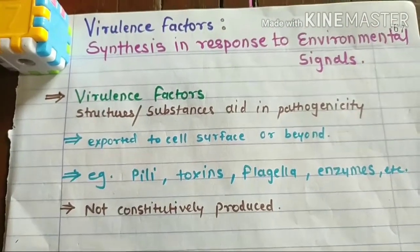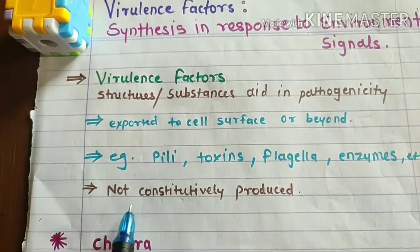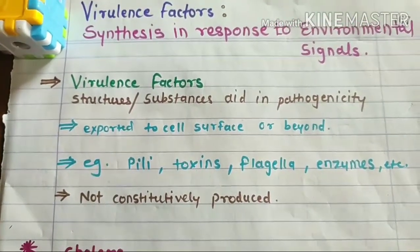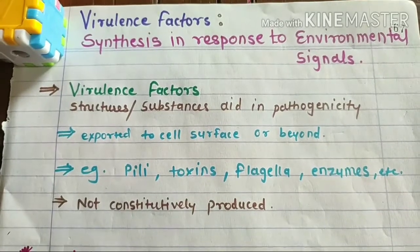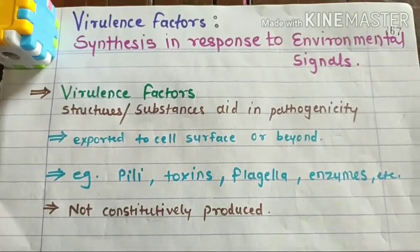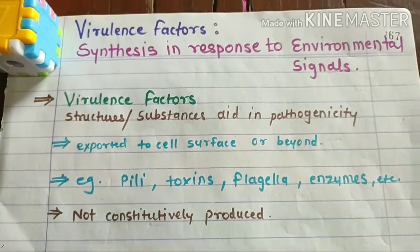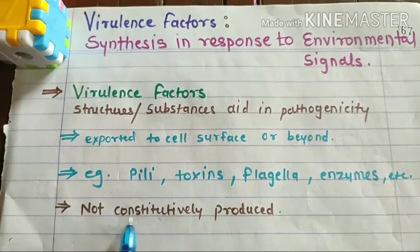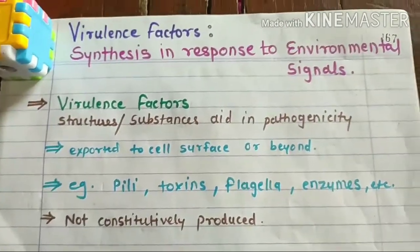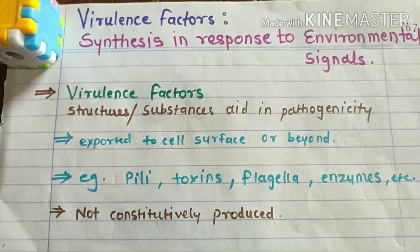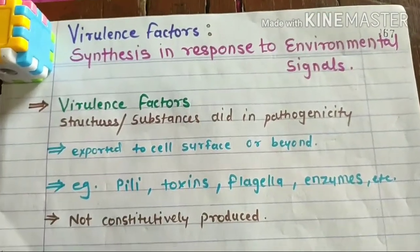Most importantly, virulence factors are not constitutively produced — constitutively produced means always producing. These virulence factors are not constitutively produced, which means there must be a condition. Only under that condition are these virulence factors produced. So bacteria, or any pathogen, must know which condition is favorable for colonizing or setting up an infection. Only at those conditions will they take the signal from the environment and result in synthesis of virulence factors.